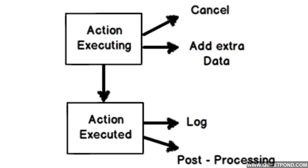Action filters help to perform logic while the MVC action is executing or after the MVC action is executed. Before an action executes we would like to execute some logic, and after an action executes we would like to execute some logic. In those kinds of scenarios we use action filters. While the action is executing we would like to do some validation check and then decide whether to cancel the action or allow it to proceed, or sometimes after the action is executed we would like to log some information. Whenever we want to do preprocessing and post-processing logic we will use action filters.